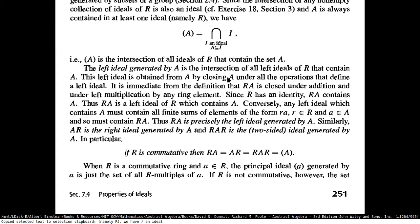That was left generated ideals. Now you can have the same thing on the right side, so you have AR. AR is going to be the right ideal generated by subset A. And RAR is going to be the two-sided ideal generated by A. We do not use the two-sided term mostly — when you speak of an ideal generated by any subset, you will have the two-sided ideals.